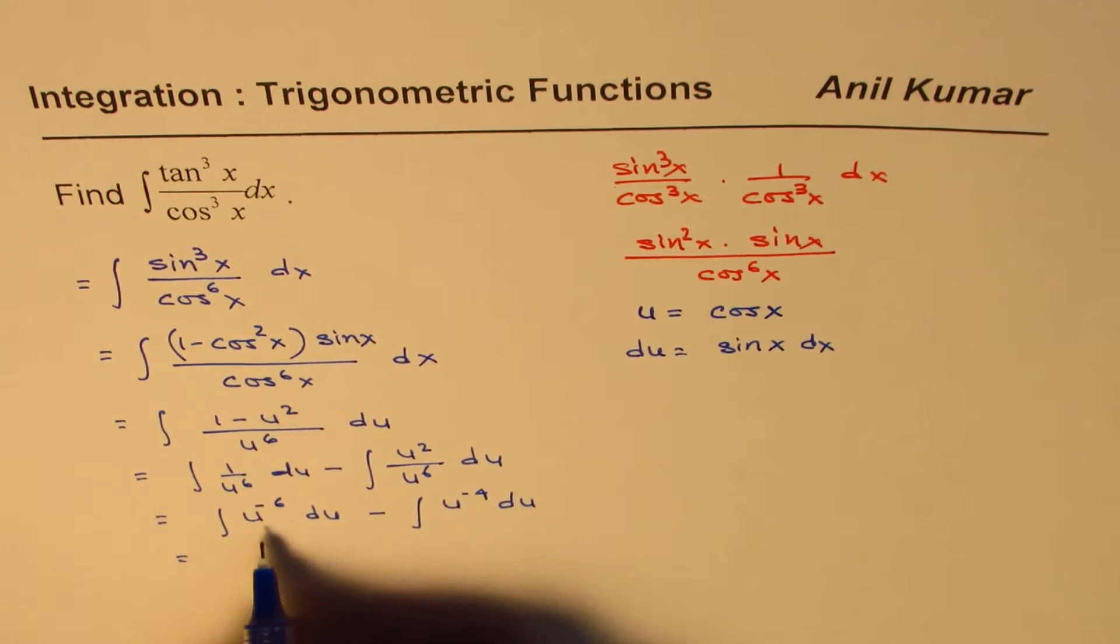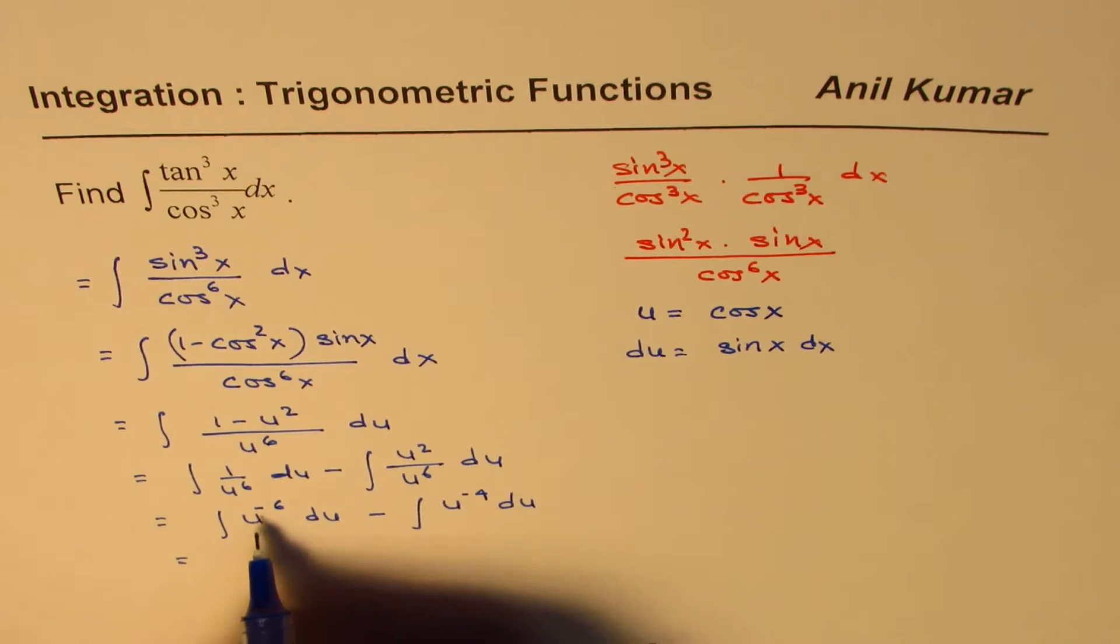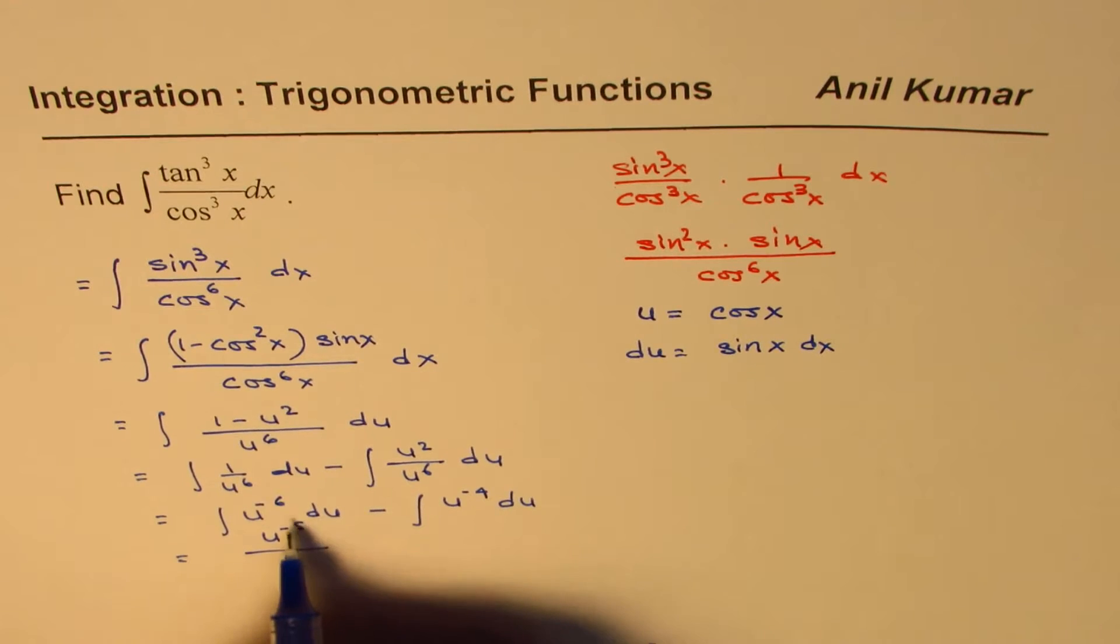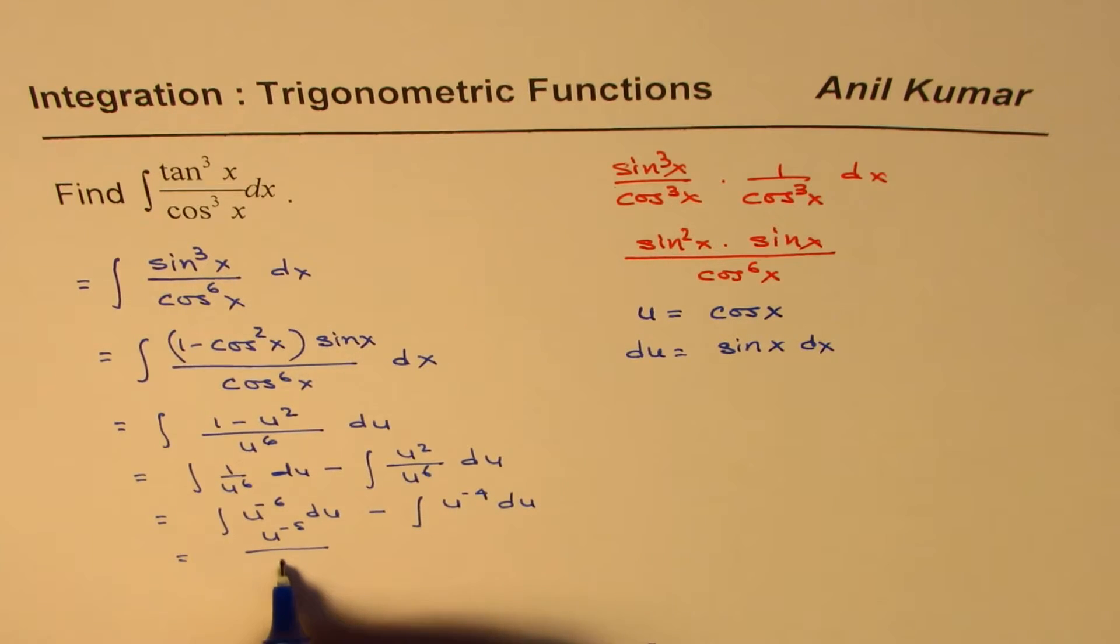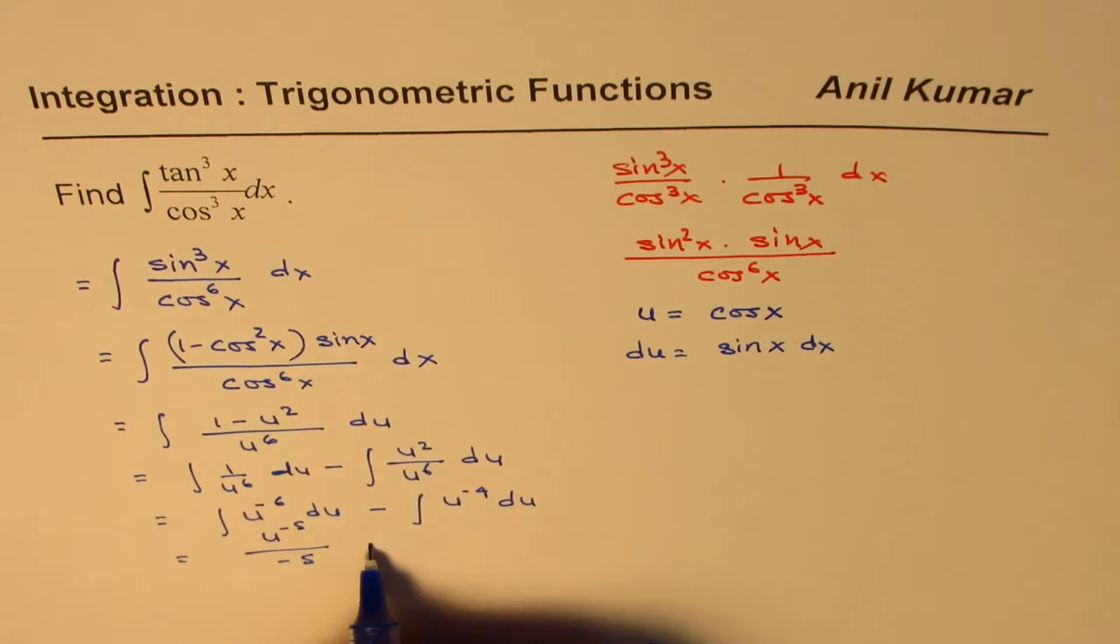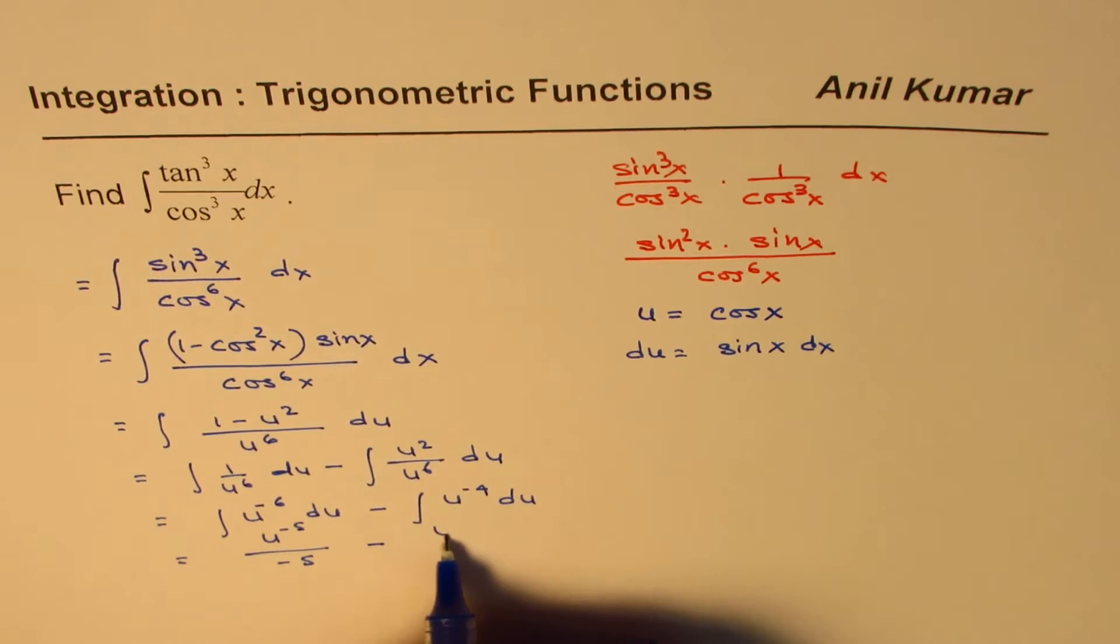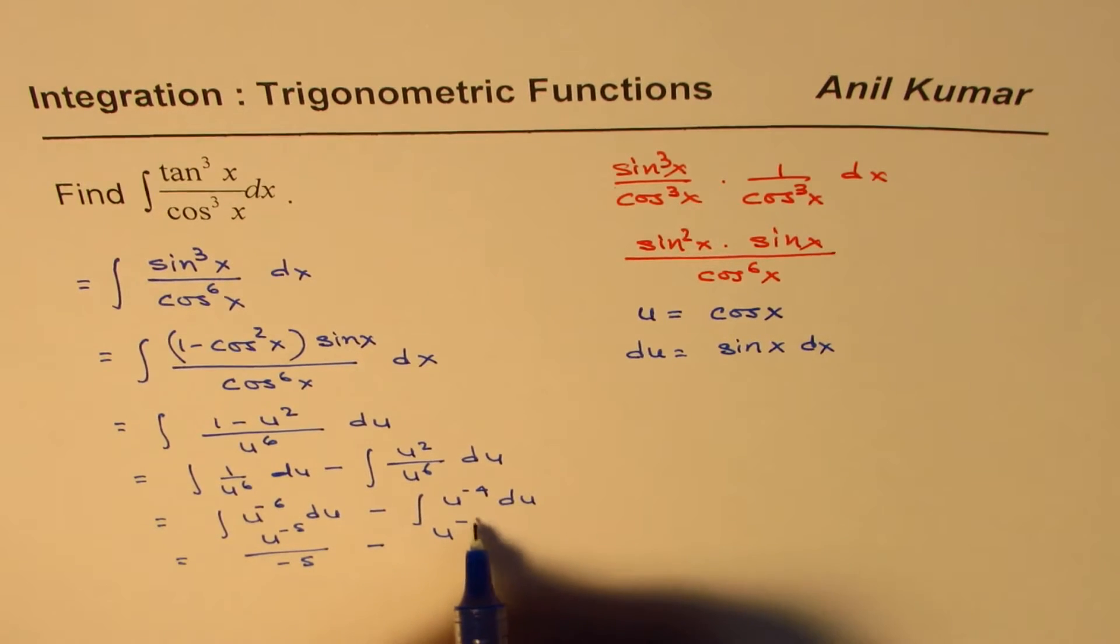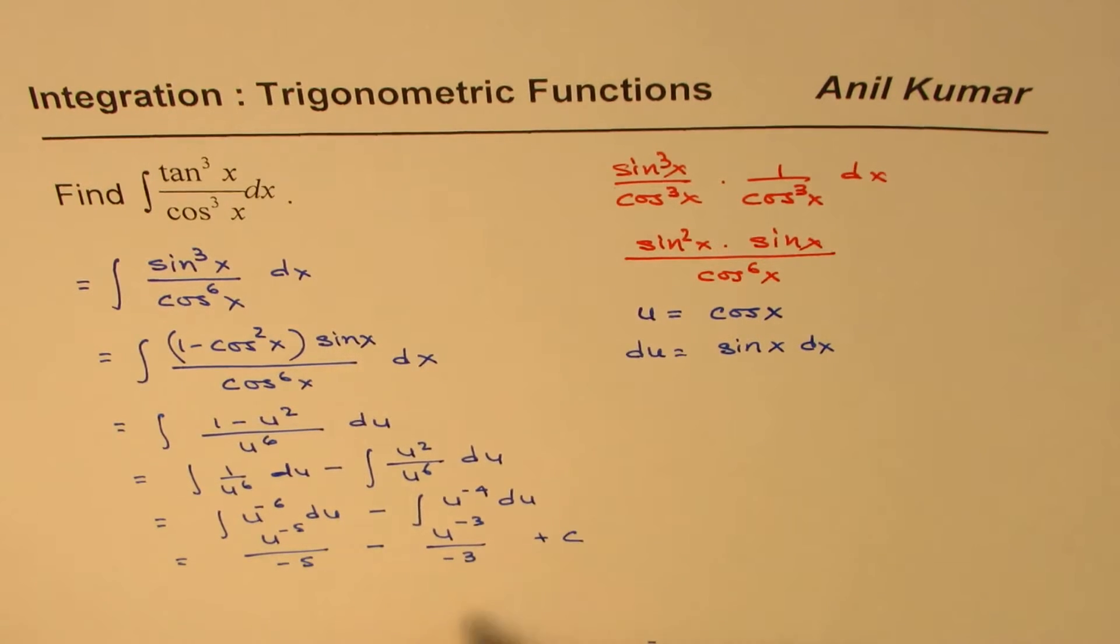Now applying the power rule, we get, we will add one, so we get u to the power of minus 5 divided by minus 5 minus u to the power of minus 3 divided by minus 3 plus c.